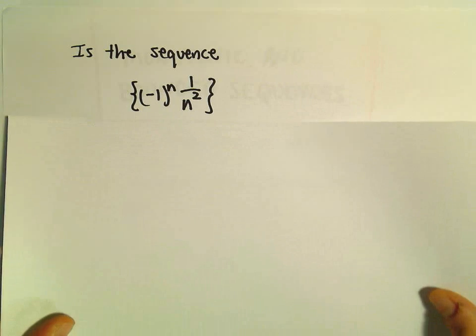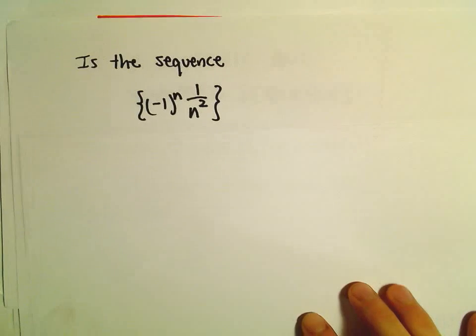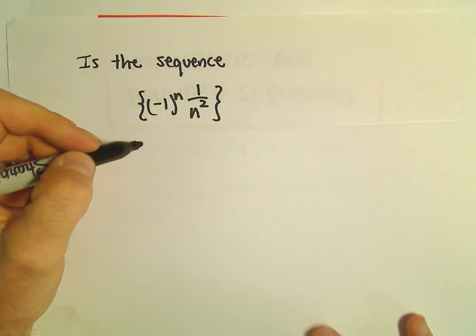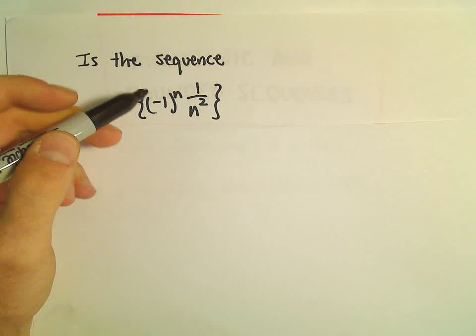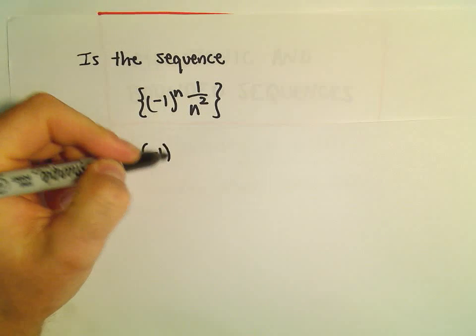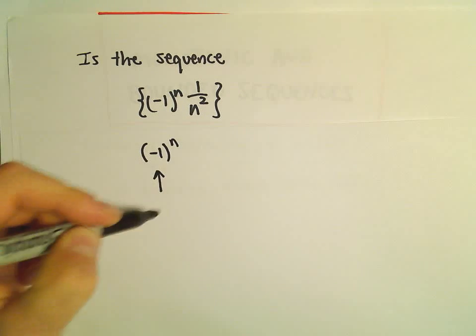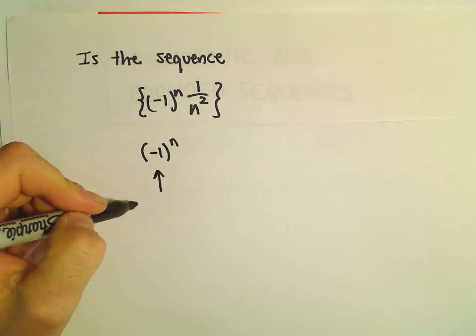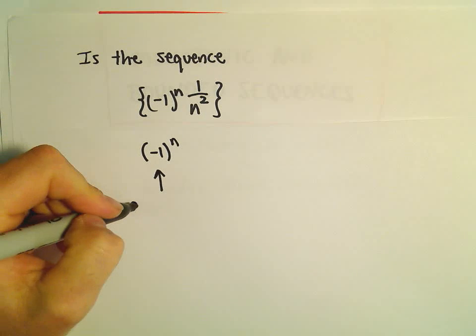There's lots of different ways to address these types of questions. I think this one's kind of easy to just plug in numbers and see what's going to happen. This (-1)^n, basically as n increases, all that's going to do is make the sequence just alternate in sign.